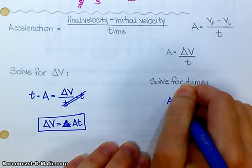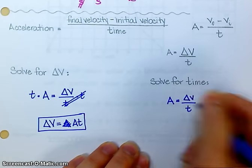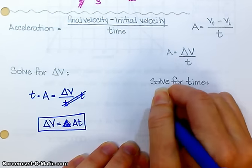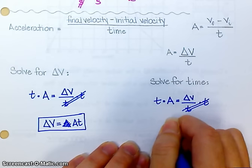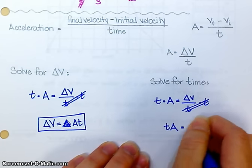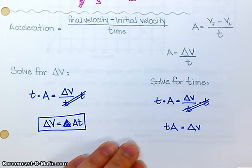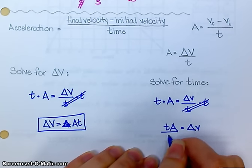Starting again, same equation. Solve for time this time. Multiply both sides by time. What's my next step to get time all by itself? Divide by acceleration.